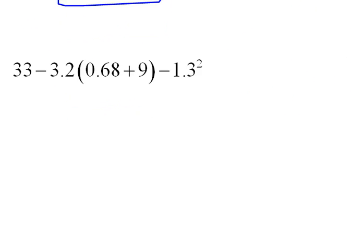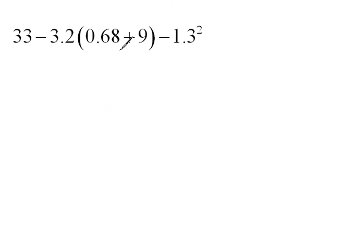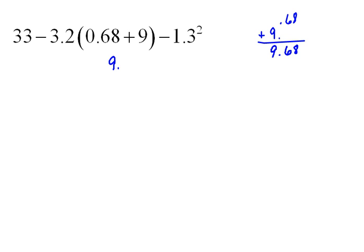Let's do one more. Here we have parentheses, exponents, multiplication, and some subtraction — a lot to work through in the proper order. Parentheses come first, so we add 6.8 plus 9. Because 9 is a whole number, the decimal comes after it. Keeping things lined up, 6.8 plus 9 gives us 9.68. I'll recopy everything else.